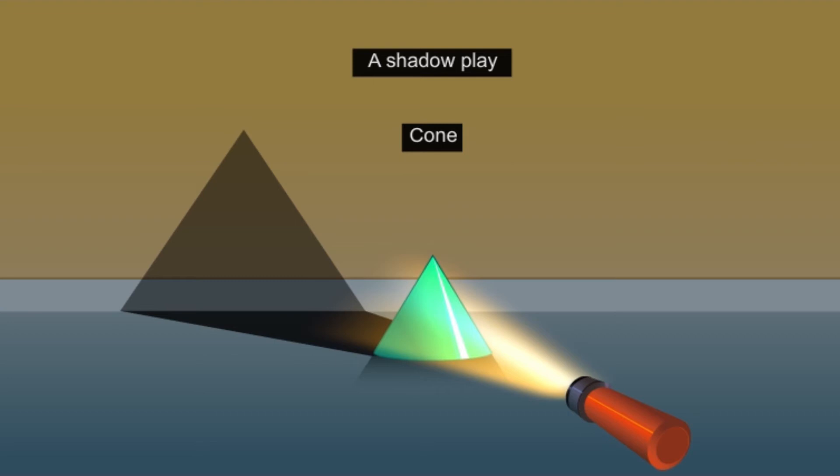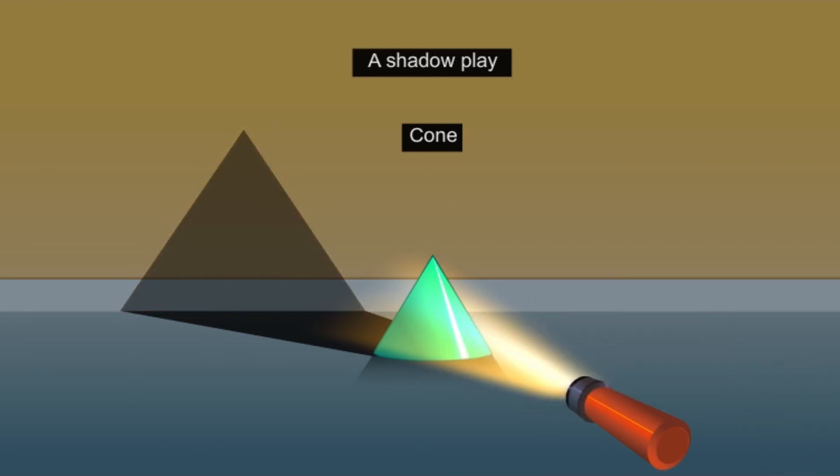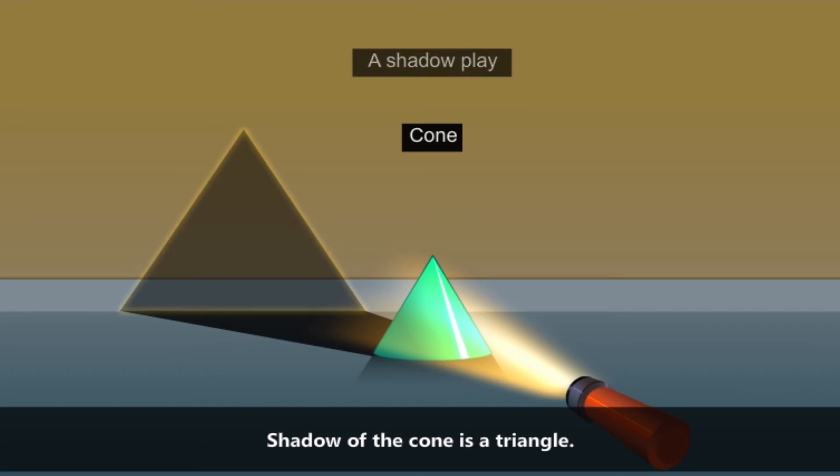A cone is a 3D object, but what do you observe about the shadow? The shadow of the cone is a triangle.